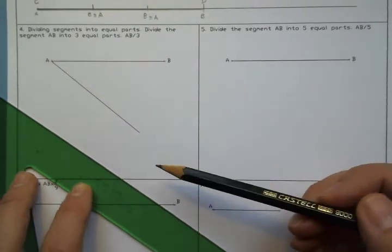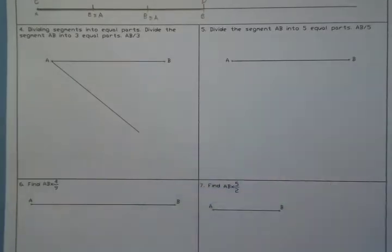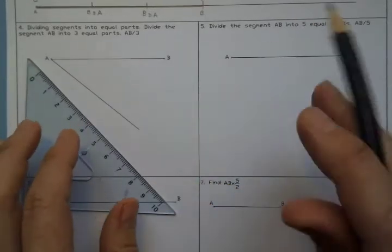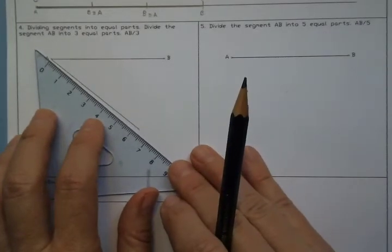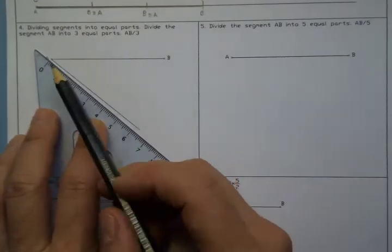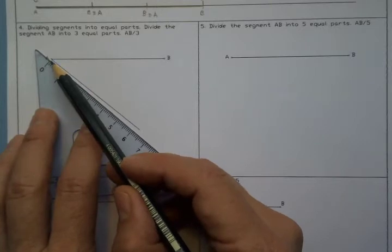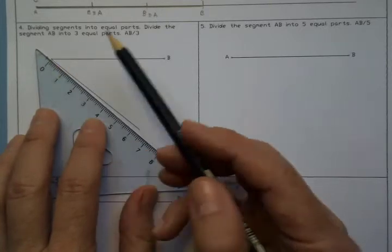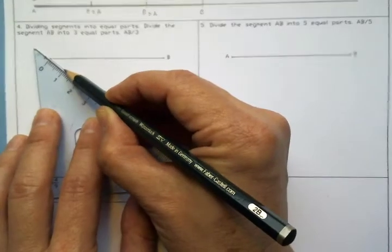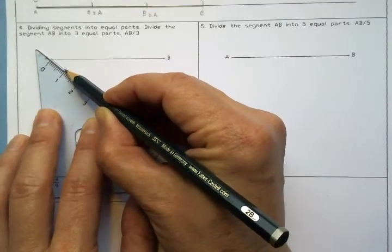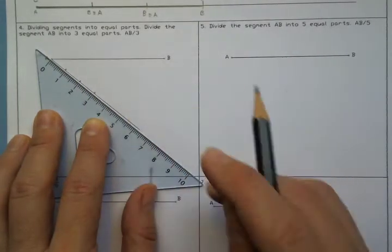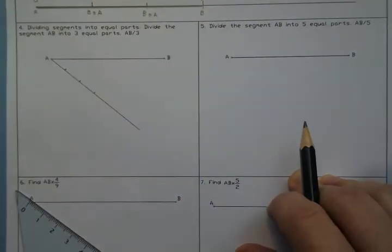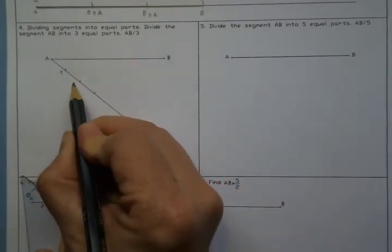Then we need a calibrated ruler and we are going to measure three equal units. I'm going to measure three centimeters. So the zero has to be next to A, and then I draw a point at one, at two, and at three. I'm going to name the points.